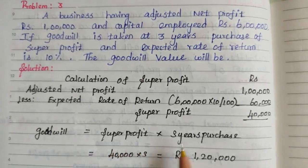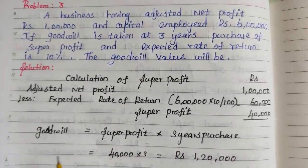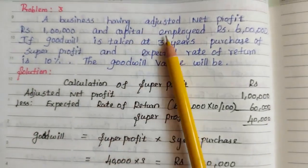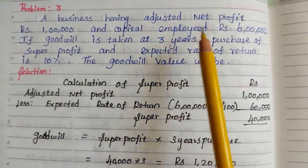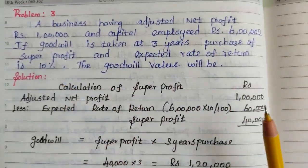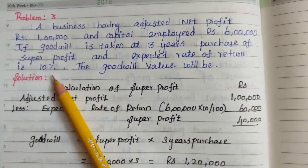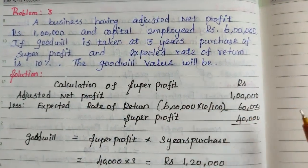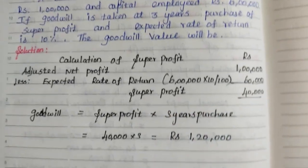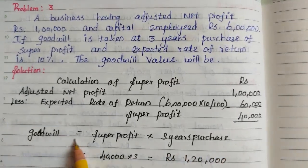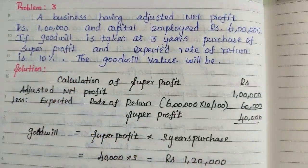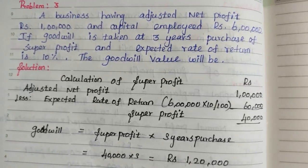Goodwill calculation formula: Super profit × number of years purchase. Super profit = Actual profit − Normal profit. Normal profit = Capital employed × expected rate of return = Rs.6 lakh × 10% = Rs.60,000. Super profit = Rs.1,00,000 − Rs.60,000 = Rs.40,000. Goodwill = Rs.40,000 × 3 = Rs.1,20,000.